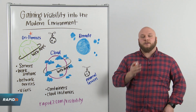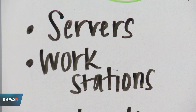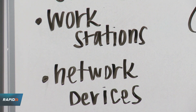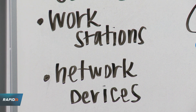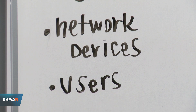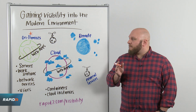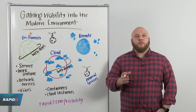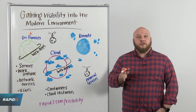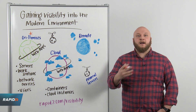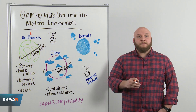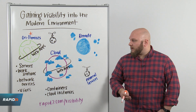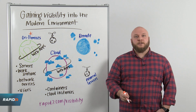Here in on-premises, we need to concern ourselves with our servers that are in the data center, the workstations that our users are using at corporate HQ, our network devices, and our actual users working at those workstations. The modern data center almost definitely is running a hypervisor, so we're going to need to integrate with that hypervisor directly so that it can report to us when new VMs are spun up or taken away, to maintain that visibility.